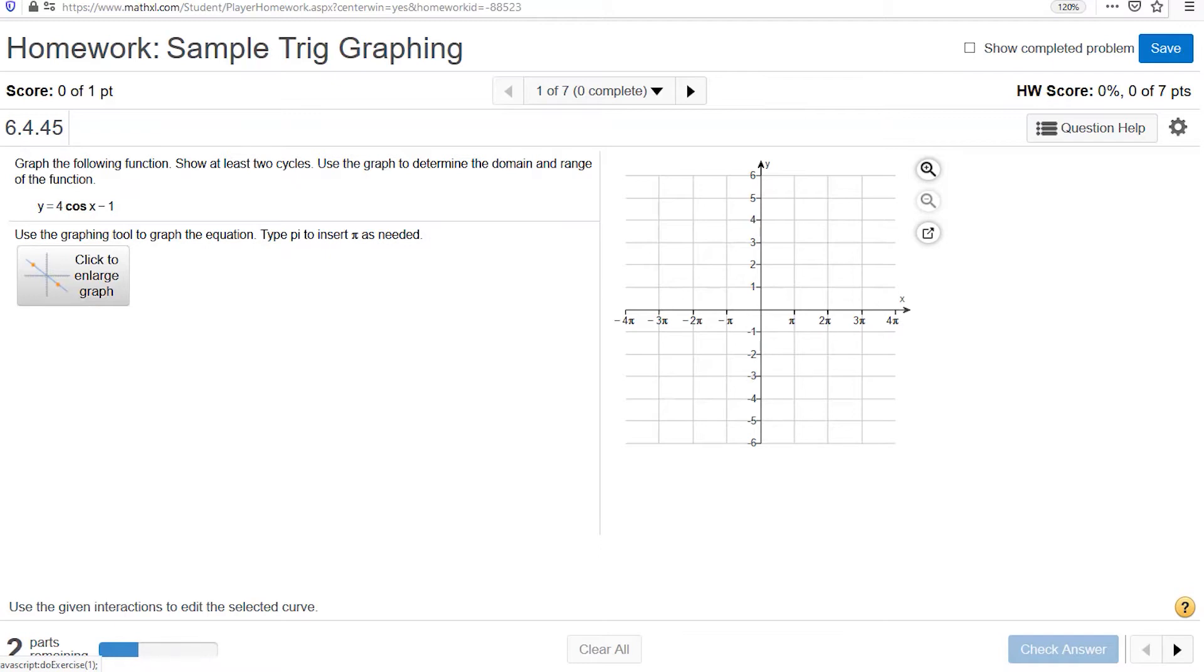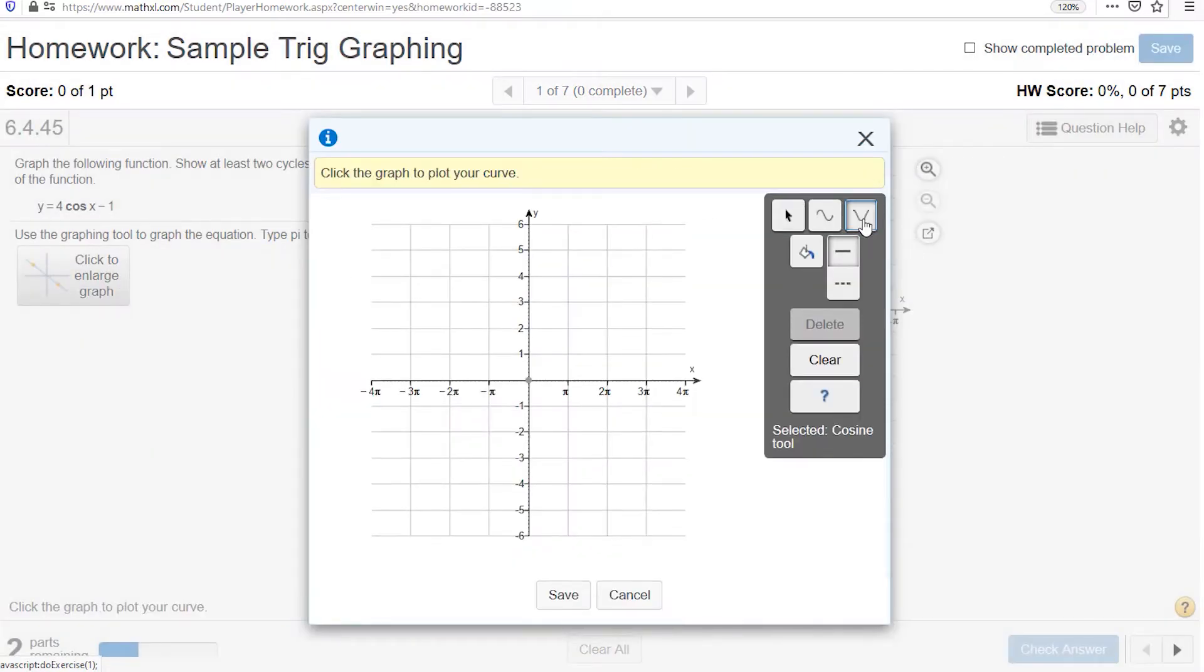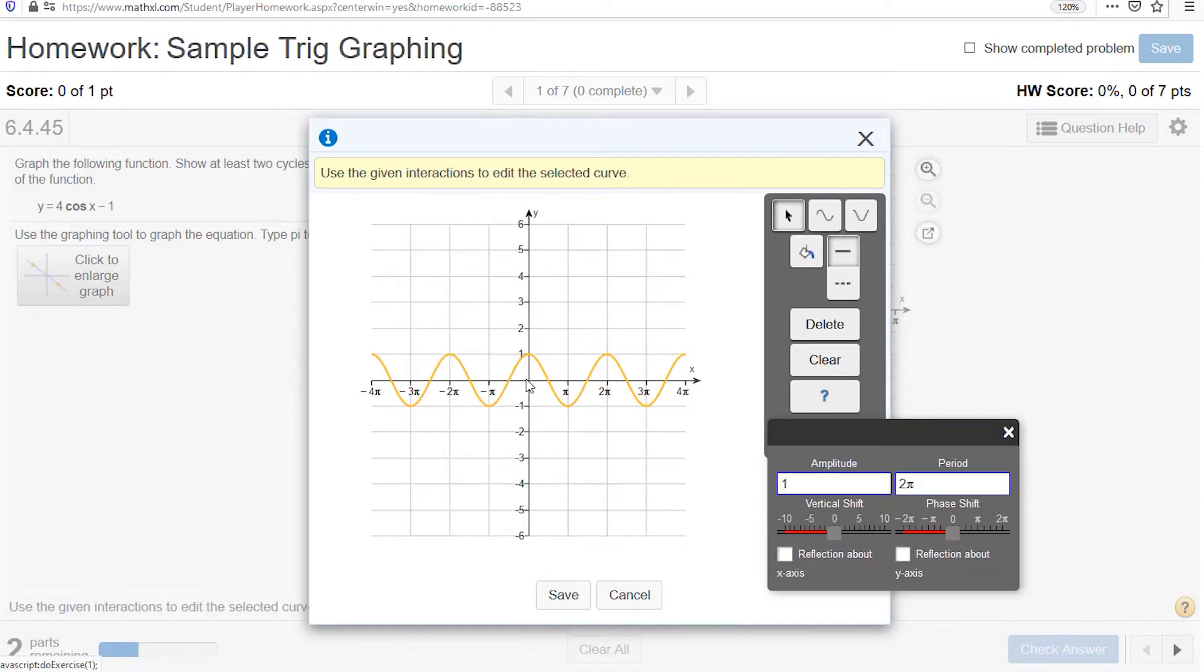Let's take a look at the awesome tools available to you in MyLab. First off here you see a graph for cosine x minus one and an empty grid. We click on enlarge to graph, we select the tool either sine or cosine, and then once we choose that tool we now select the amplitude, so in this case the amplitude is four. A vertical shift of minus one, we can see the graph being drawn as I make those adjustments.